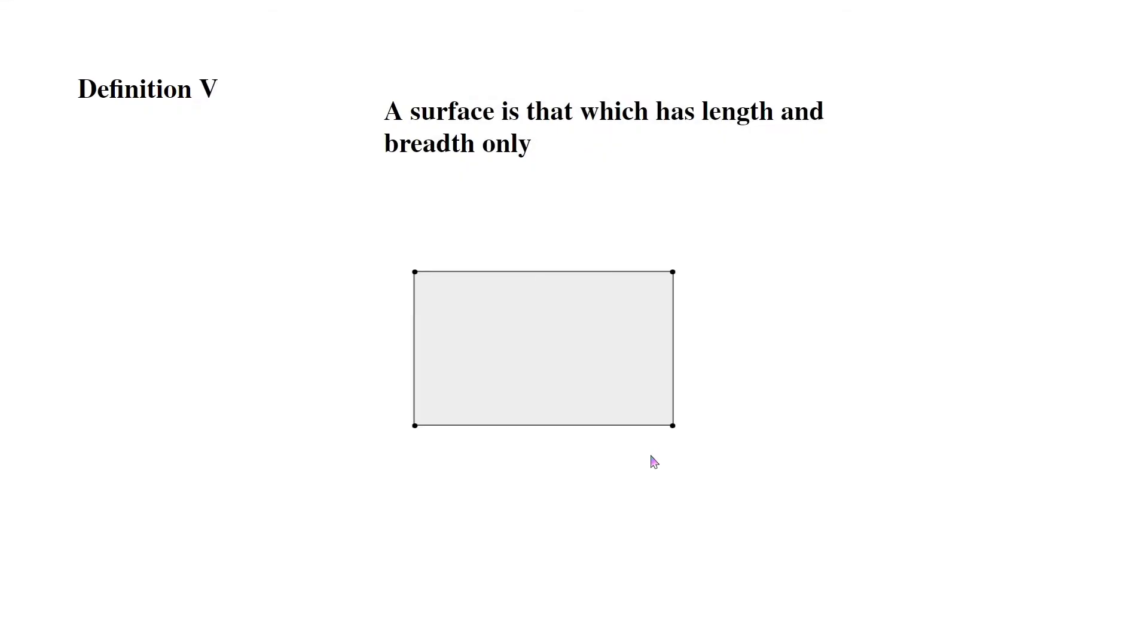Now Definition 5: A surface is that which has length and breadth only. So this is a surface. For example, it only has length and width. Two lengths and two widths, and that creates the grayish surface.